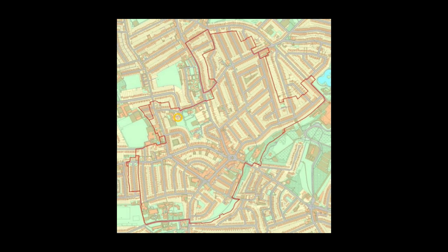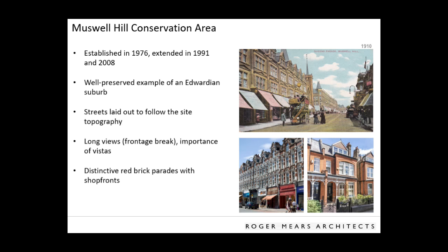The Muswell Hill conservation area was founded in 1974, then enlarged twice — in 1991 and 2008. Muswell Hill is a really pretty town and a nice example of Edwardian development, set high on the top of a hill with lovely topography. There are rows of terraces that are really well designed with lots of decoration and details, and the frontages have breaks between them giving really long views towards London.